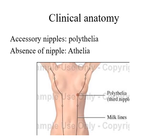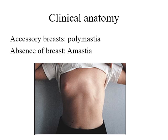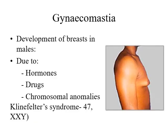The clinical anatomy of the mammary gland includes developmental defects. Accessory nipples are called polythelia; absence of a nipple is called athelia; accessory breast is called polymastia; and absence of breast is called amastia. Gynecomastia is the development of breast in males, due to hormones, drugs, or chromosomal anomalies such as Klinefelter syndrome.